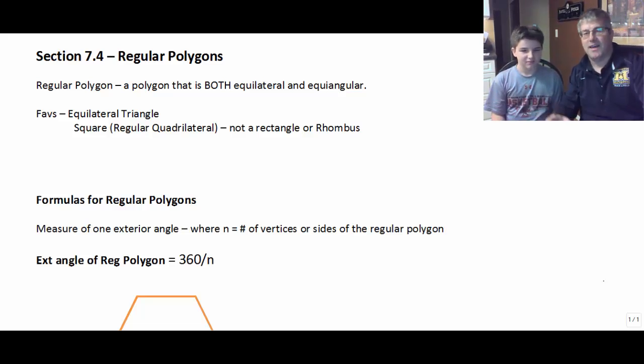So there you go. You heard it from a regular kid that a square is a regular quadrilateral, but our rectangle and our rhombus are not. And he is exactly correct. So thank you very much for your help. We appreciate it. It was a very special performance by a regular kid.